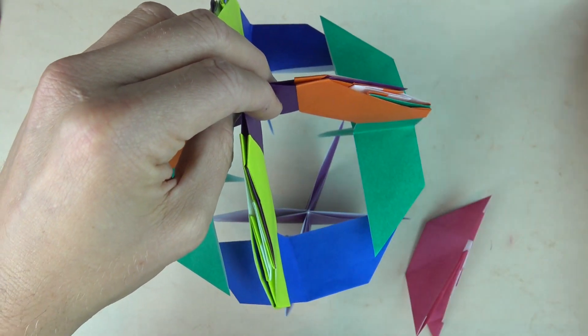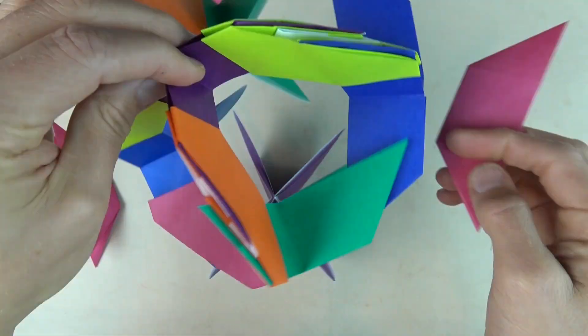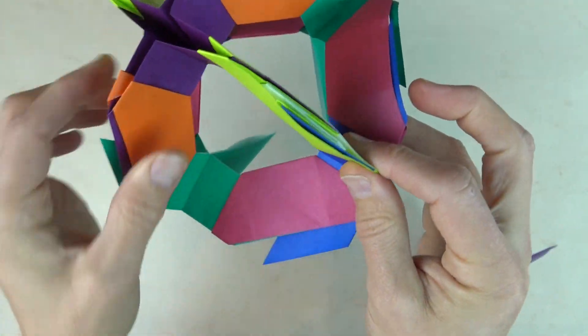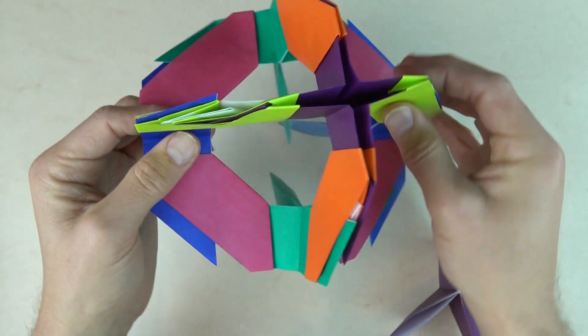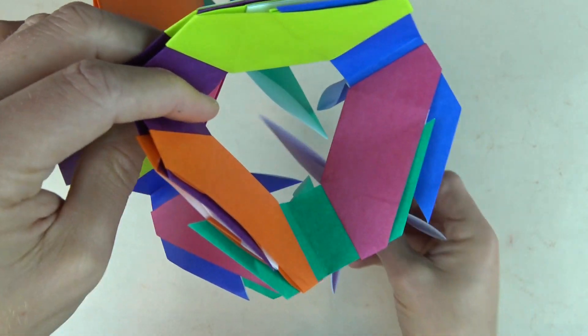And for the equator I'm going to use the magenta modules. Okay. So the magenta equator is complete. And now I just need to attach the south pole.